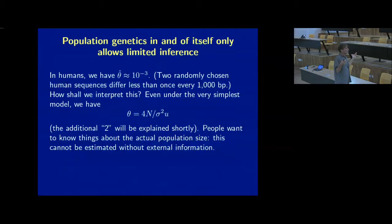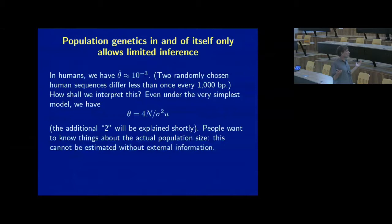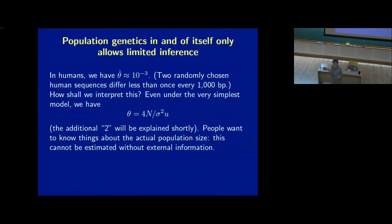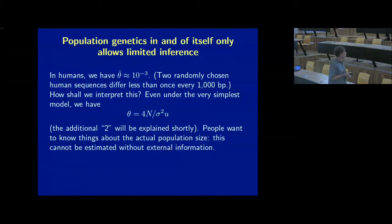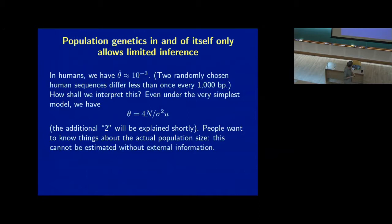People then do things like estimate a mutation rate based on the fossil record and some molecular clock argument, and they divide that out to estimate effective population size N. I've never understood why people care, because this is not a population size in any meaningful sense — it's a population size only if you actually believe you had a Wright-Fisher model with variance in reproductive success equal to one. Even under the simplest model you also need to know the historical variance in reproductive success.